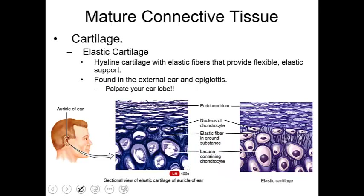The next type of cartilage — the most flexible — is elastic cartilage. It is rich with elastic fibers and is found in your external ear. If you palpate your earlobe, it can be bent and twisted because of the elastic cartilage. In this 400x magnified light micrograph, you can see the air pocket, the chondrocyte, the ground substance, and clearly visible thin wire-like elastic fibers.